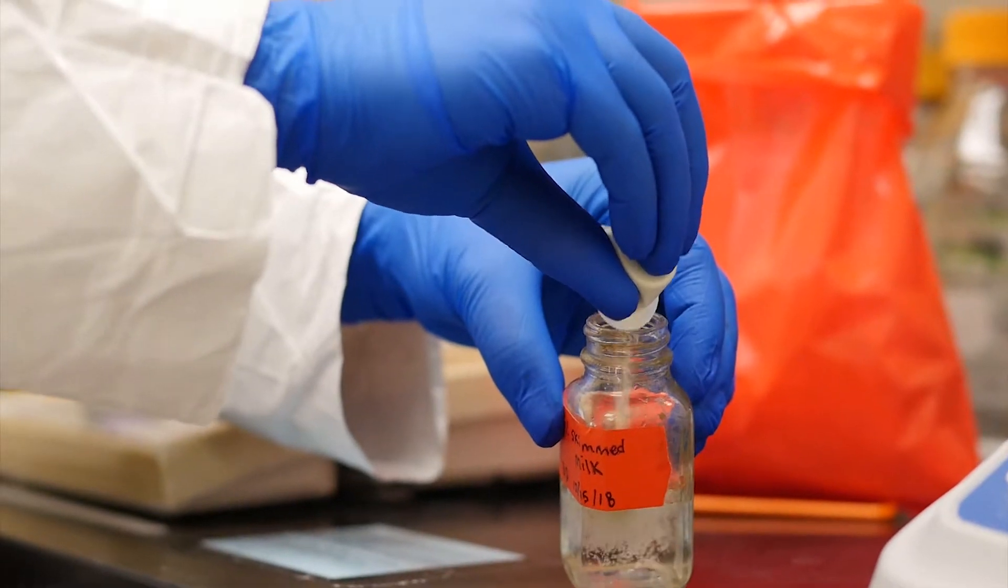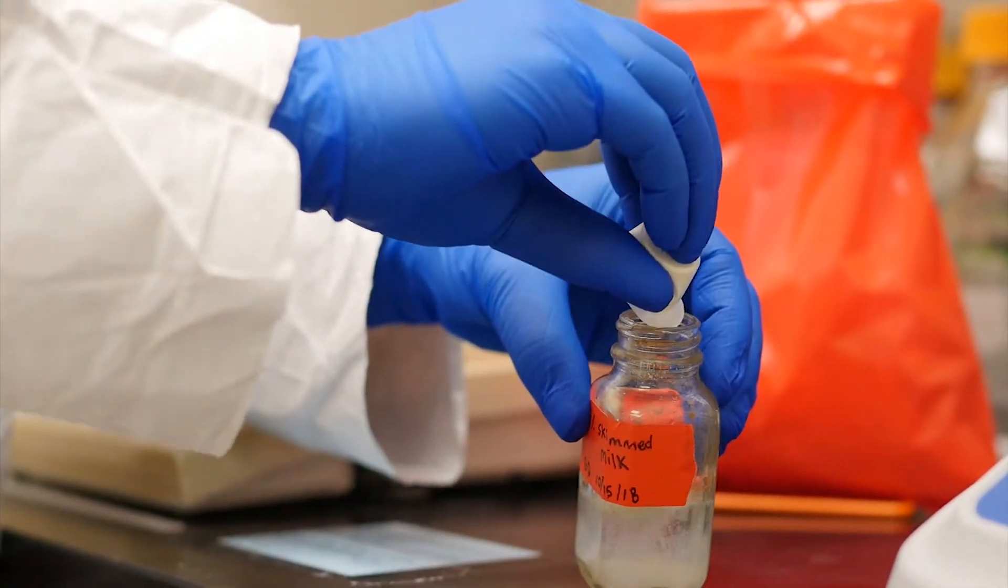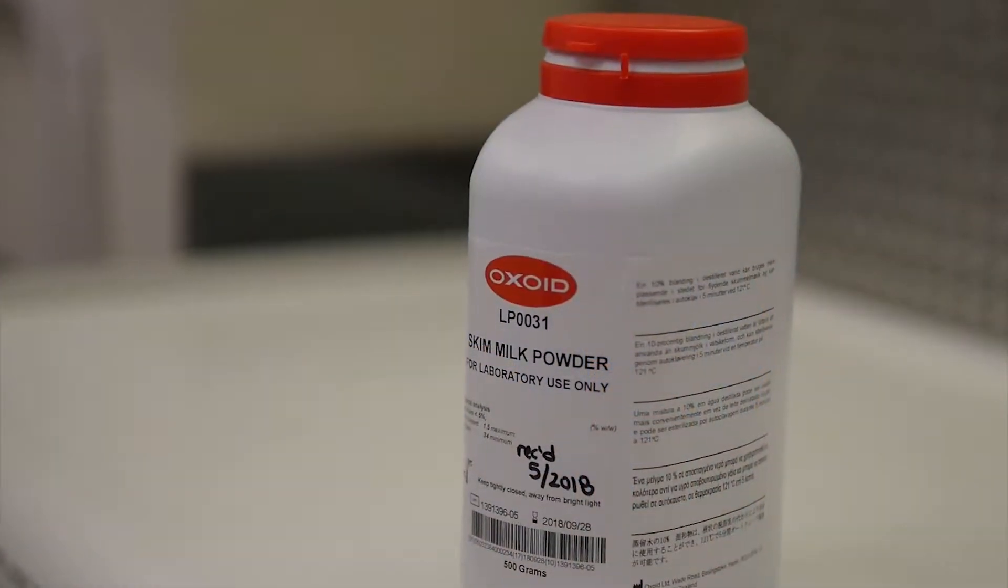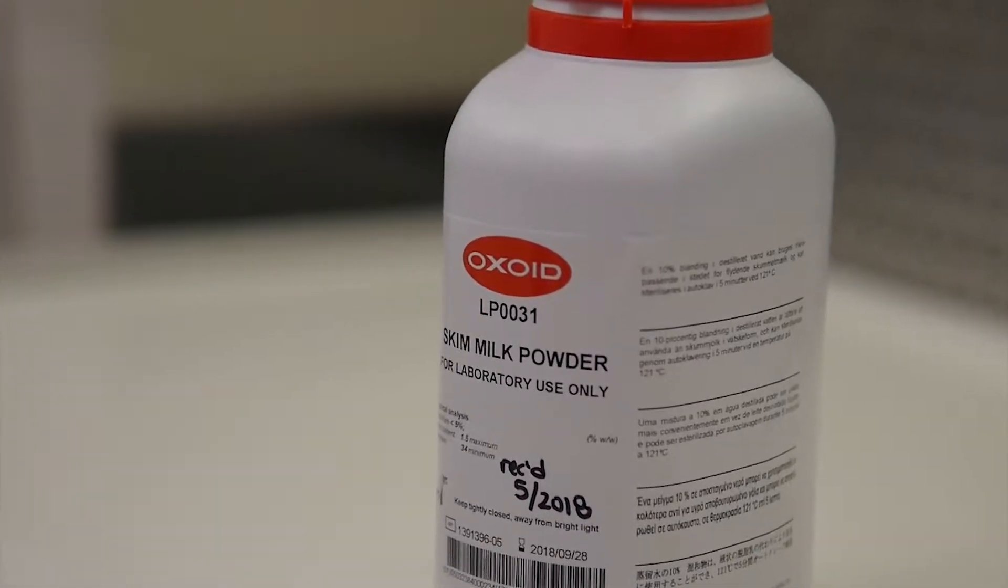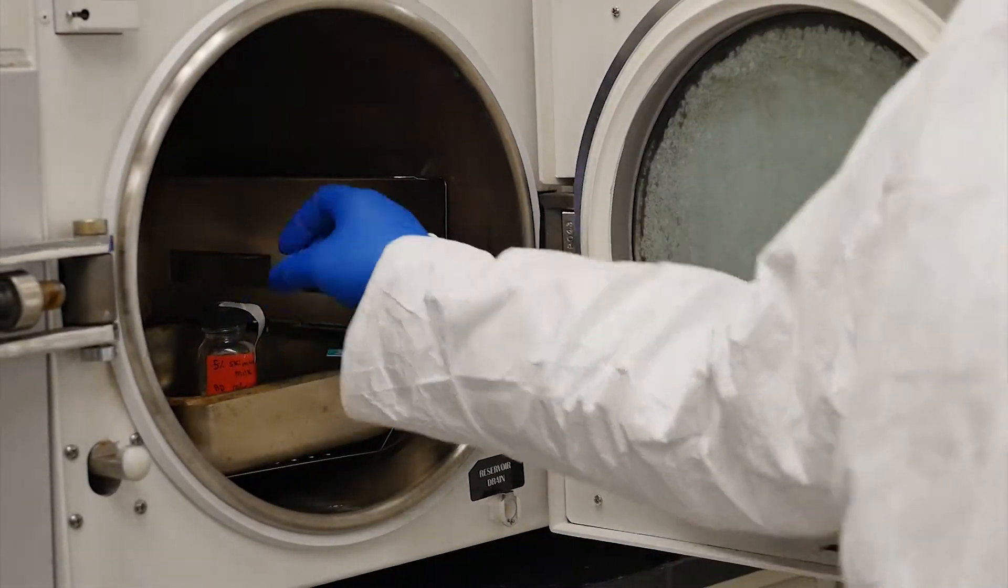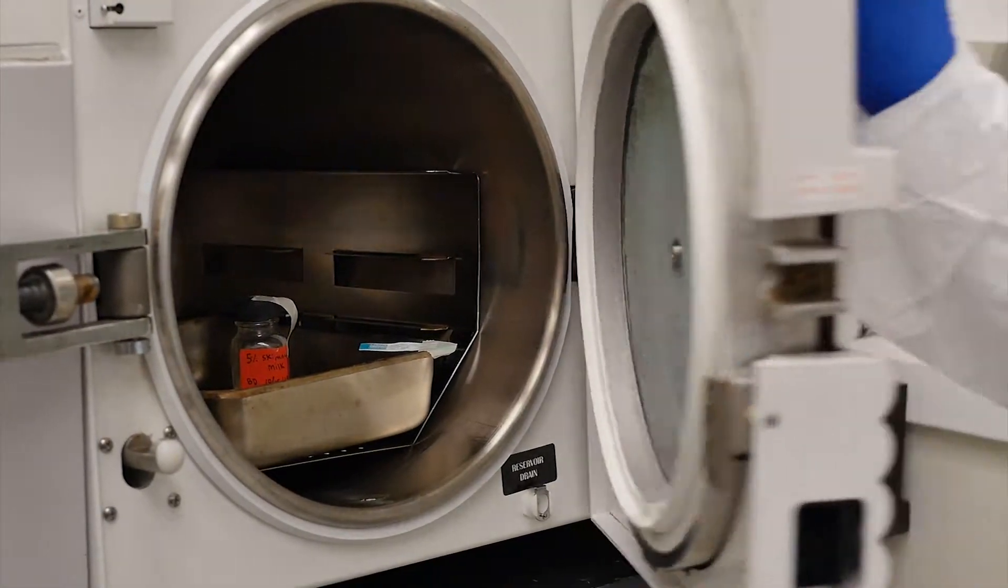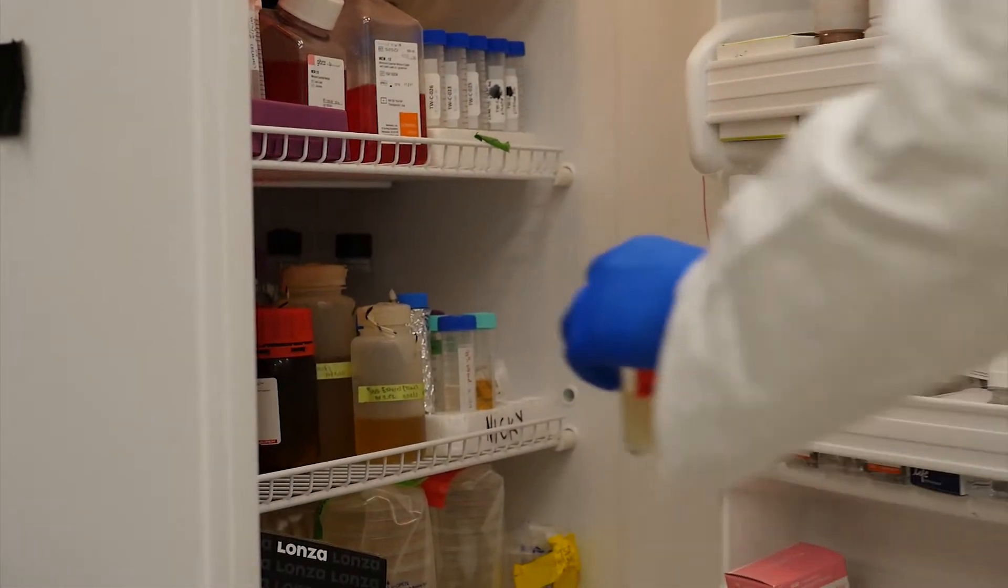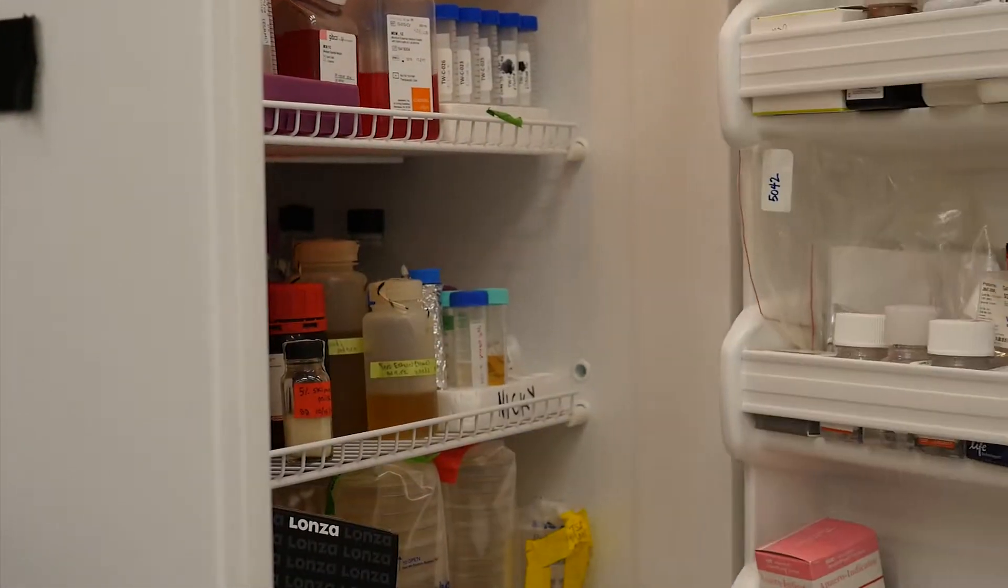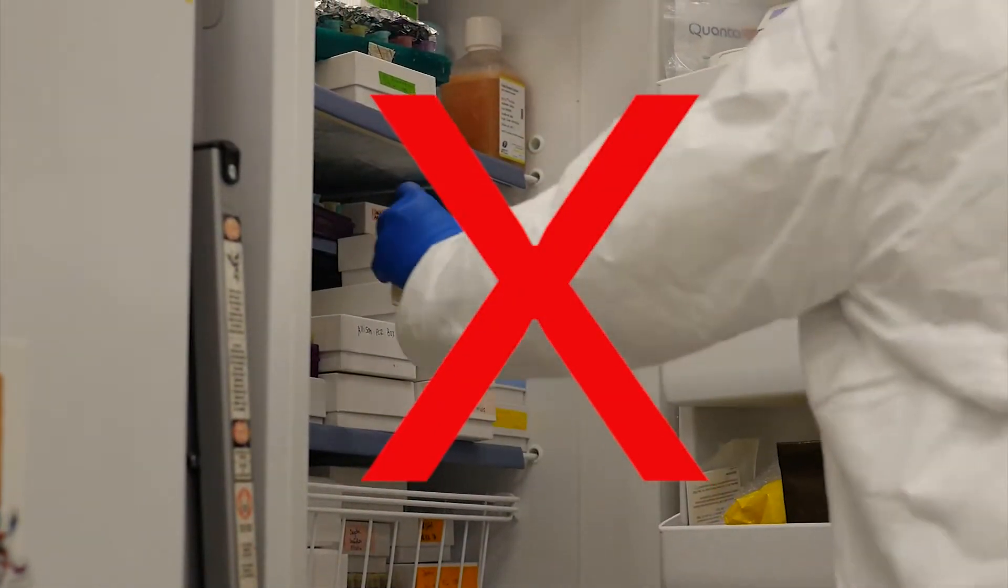Next, prepare your 5% skimmed milk solution. Oxoid skimmed milk powder is the validated reagent brand for this protocol. The skimmed milk should be autoclaved at 110 degrees Celsius for 15 minutes. You can store the skimmed milk at 4 degrees Celsius for up to 3 days. This solution should not be frozen.